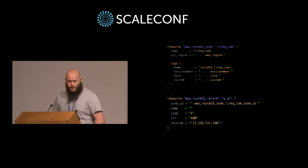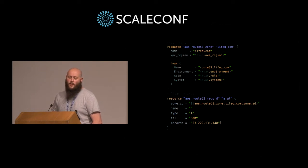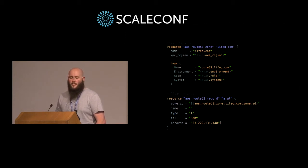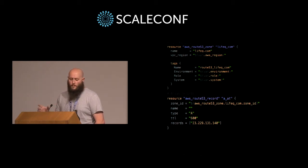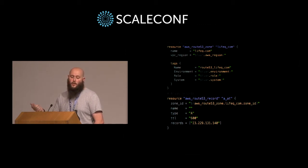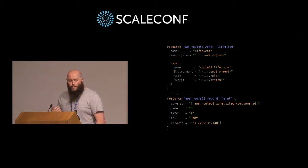Now, touching on Terraform — we use it to manage our DNS infrastructure. You can see the actual resource definition: defining lifegear.com as a zone, then adding an A record at the bottom by referencing that zone using Terraform's resource referencing syntax. Variables like environment, role, system, and AWS region are parameters passed in. That bottom record with a hard-coded IP is our WordPress blog, a static IP that almost never changes.